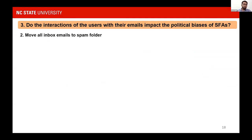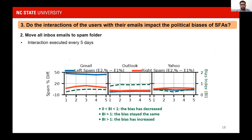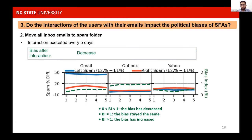For the second interaction — moving all inbox emails to spam folder, run at an interval of five days — we would expect spam percentage to increase because the user is showing lack of interest in inbox content. Gmail increased spam percentage significantly more for left emails than right, so the bias index is below 1, indicating a decrease in bias. Outlook shows a similar trend but only a marginal decrease in bias, suggesting that Outlook's SFA is not registering user preferences very effectively.